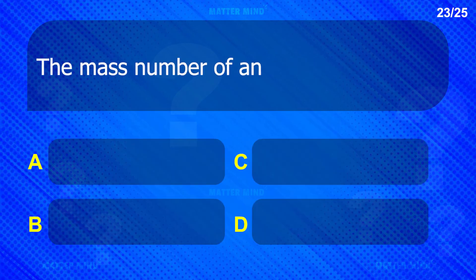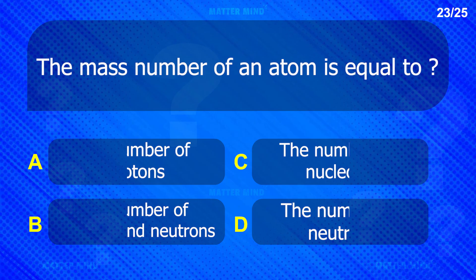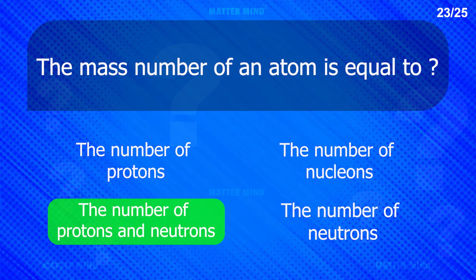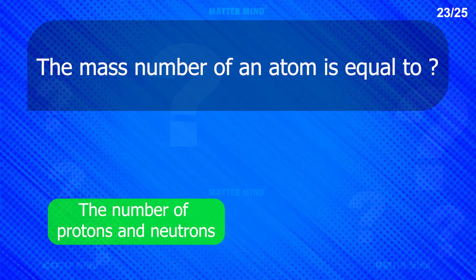The mass number of an atom is equal to: the number of protons and neutrons.